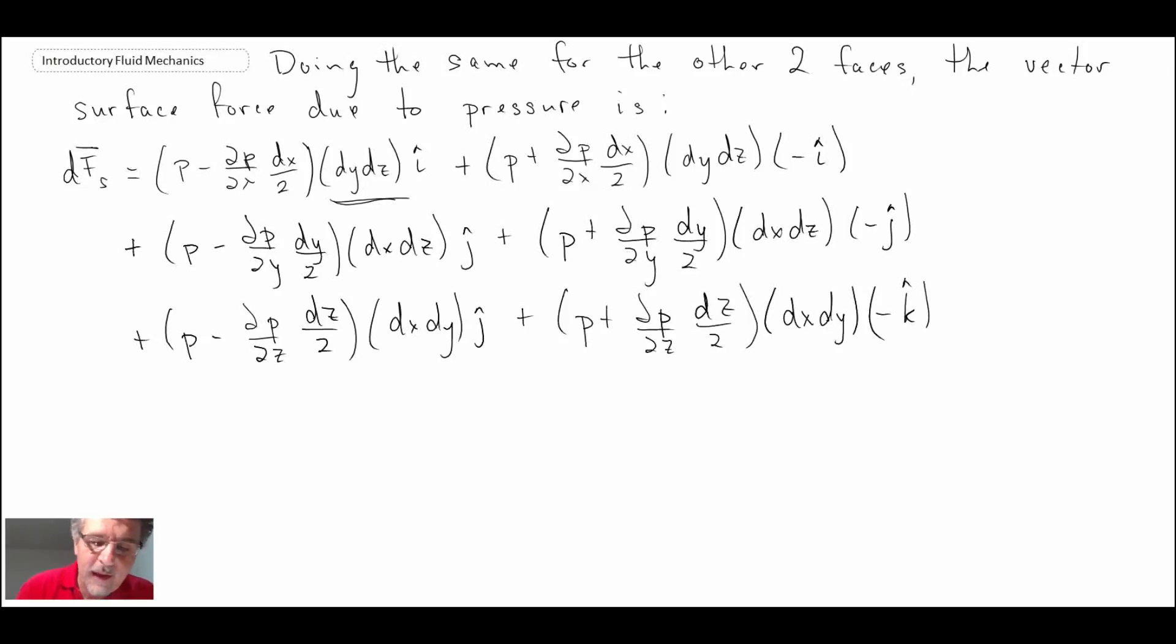We get that for the surface, the vector surface force due to pressure. What we'll notice to begin with, this pressure and this pressure, they cancel out because we have the minus I with the unit vector. Similarly, this and this and this and this, so those pressures disappear. We have DX over 2 and DX over 2 multiplied by DY, DZ, DY, DZ. Well, those are the same, so they add up. Instead of DX over 2, you just get DX.